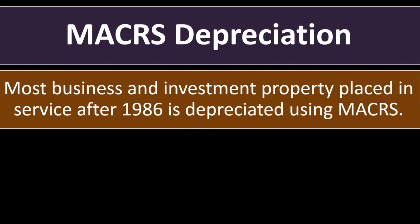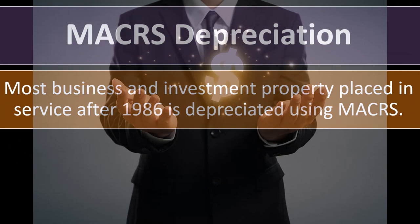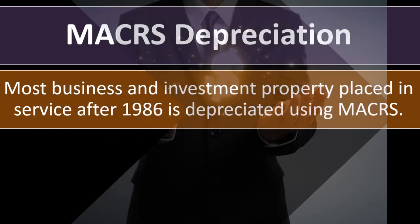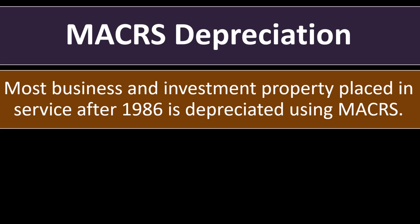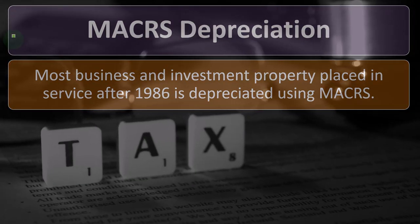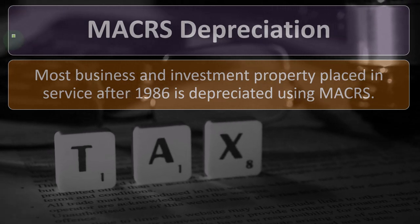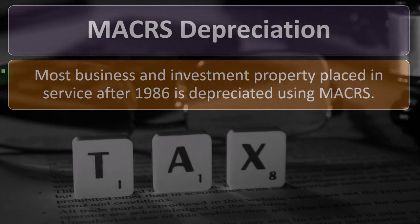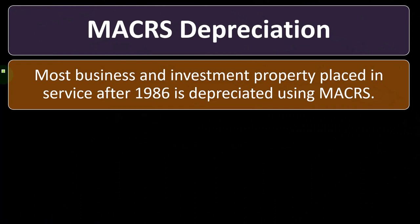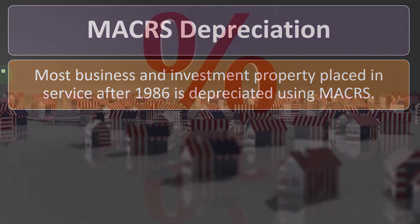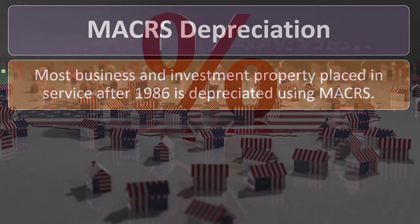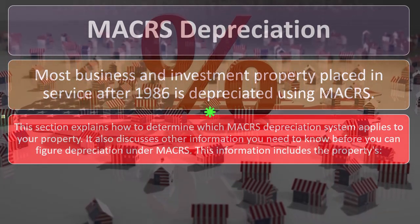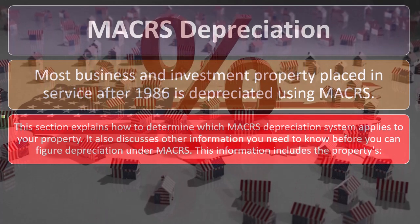MACRS depreciation is the big one to understand. When we think about depreciation methods for the tax code, we're typically thinking about some variant of MACRS — Modified Accelerated Cost Recovery System — which takes normal depreciation concepts such as straight-line or double-declining and puts them into a more stringent tax code framework. Most business and investment property placed in service after 1986 is depreciated using MACRS.